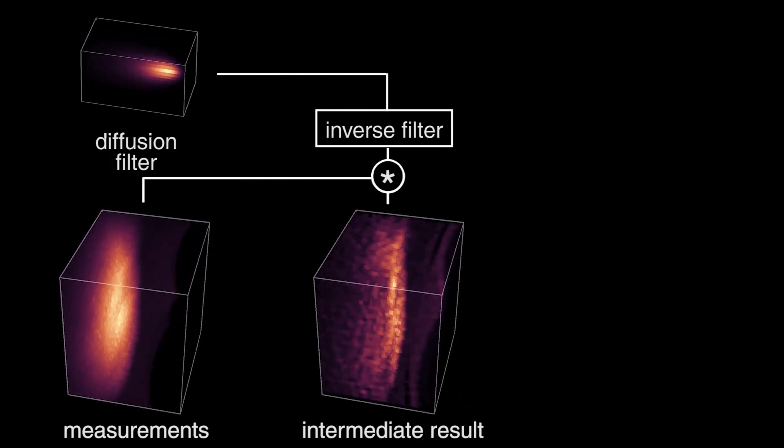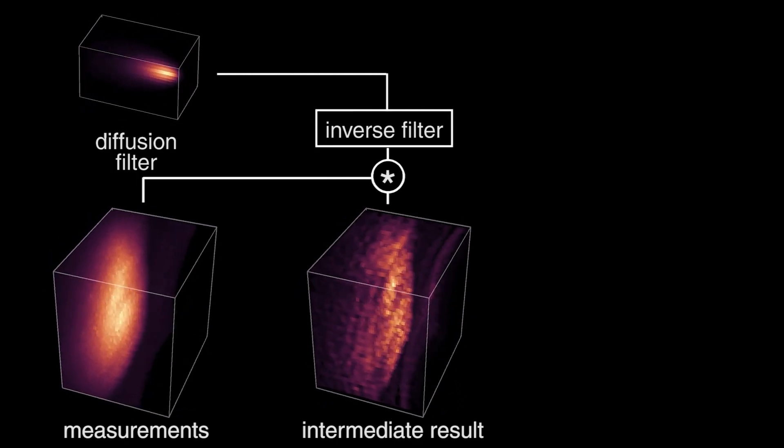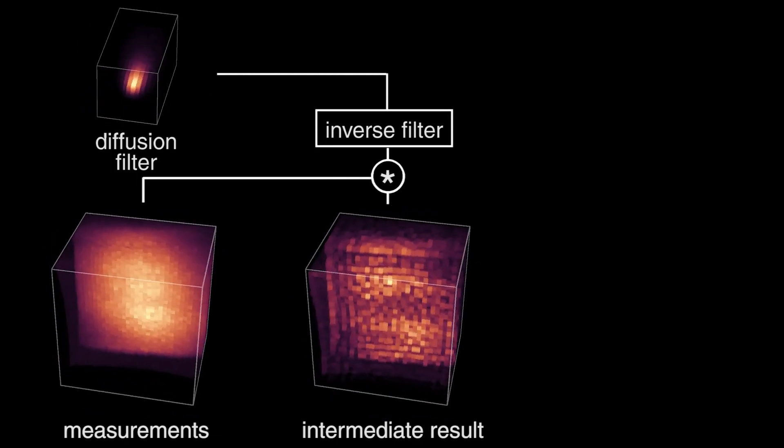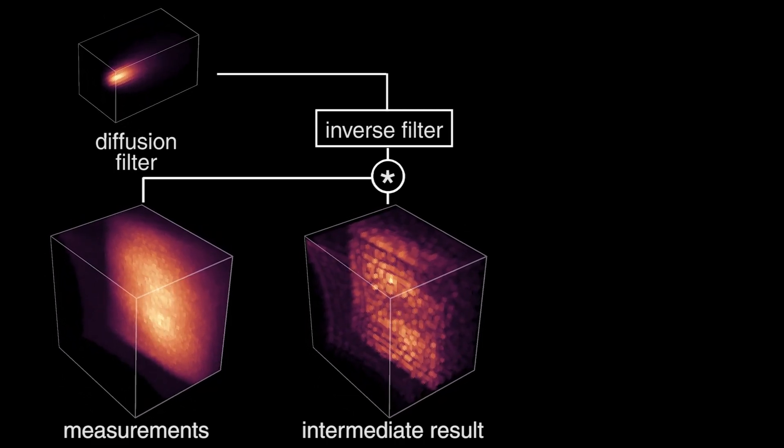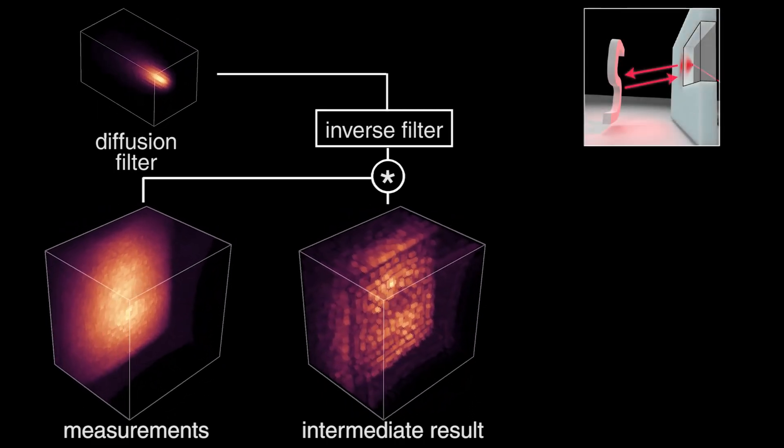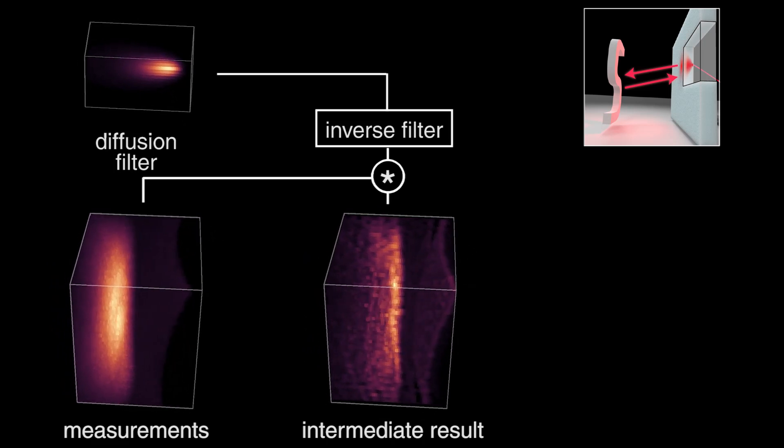Applying the inverse filter yields an intermediate result which can be interpreted as an estimate of the measurement volume without diffusive scattering, capturing transport of light from the far side of the scattering media to the hidden object and back.